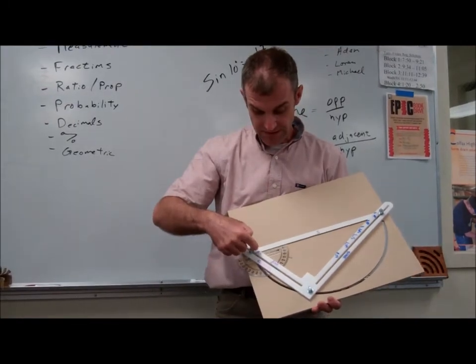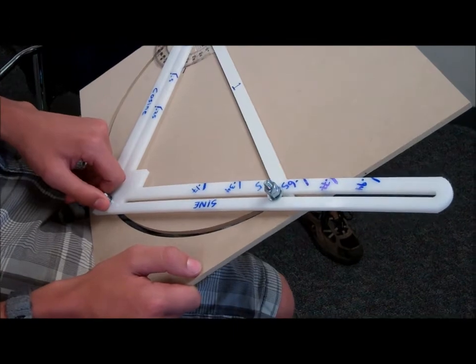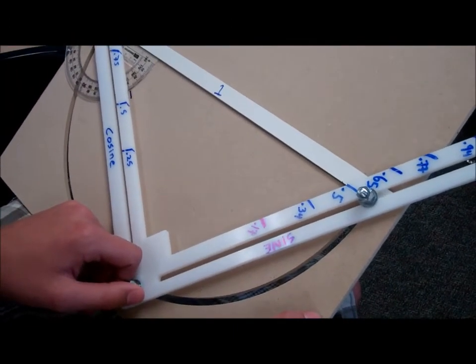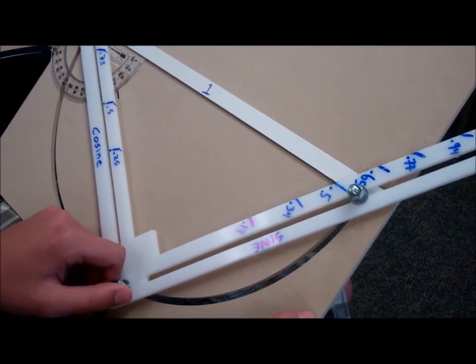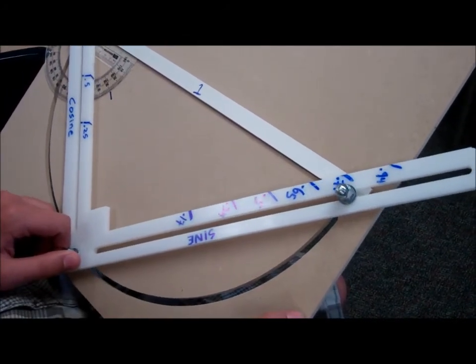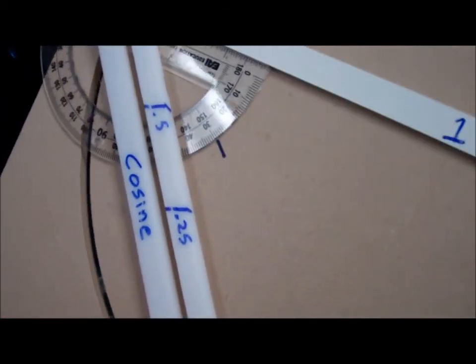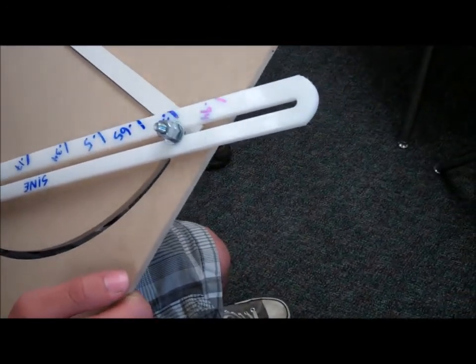The cosine of 60 is 0.5. With the trig calculator, go ahead and do the sine of 30 degrees. 0.5. Sine of 45 degrees. So you set that at 45, and it's 0.7.